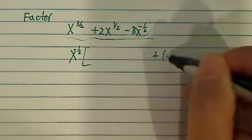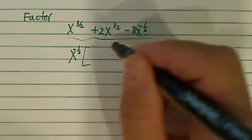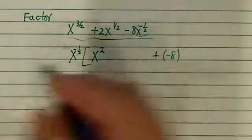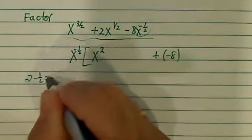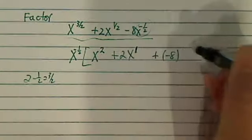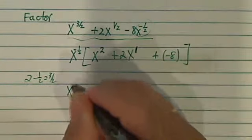So then you have a minus 8 over here. And then if you pull this one out, you have x to the square, because 2 minus half is equal to 3 over 2. And then over here, you would have a 2x to the 1. Now here we can factor pretty easily.